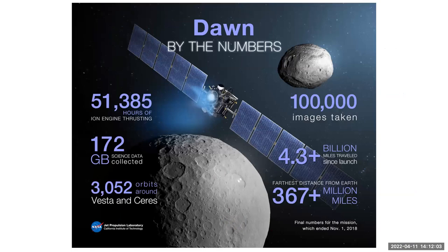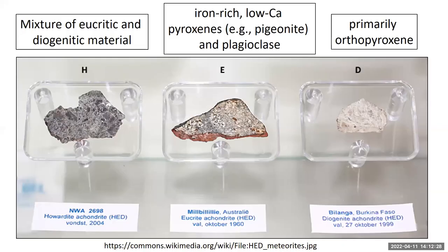Dawn by the numbers: about 100,000 images taken by the spacecraft, over 3,000 orbits of Vesta and also Ceres. All this data was taken, and it was an amazing mission that studied Vesta — which is thought to be the parent body of meteorites we have on Earth — and also Ceres.